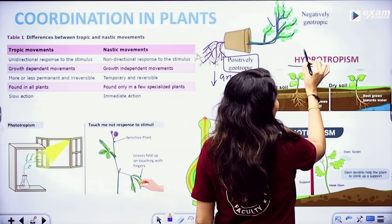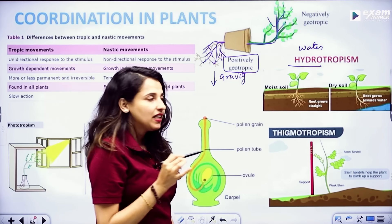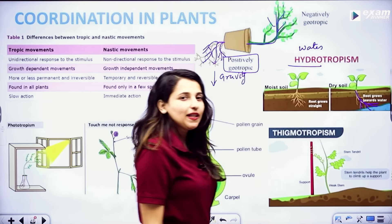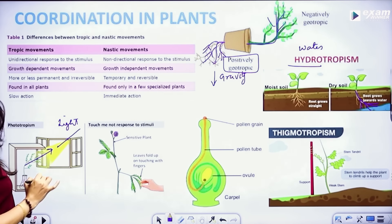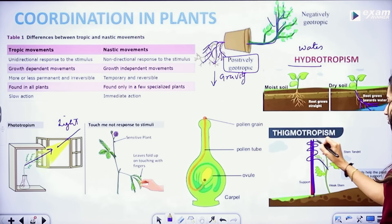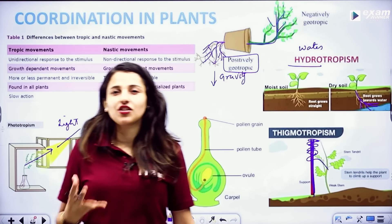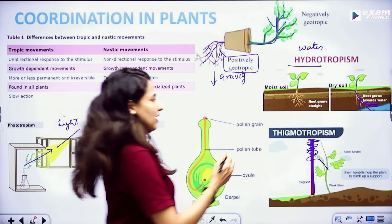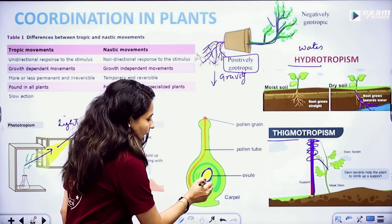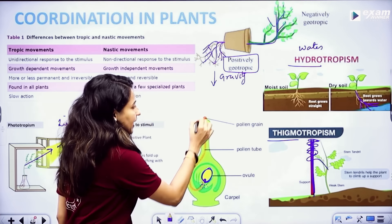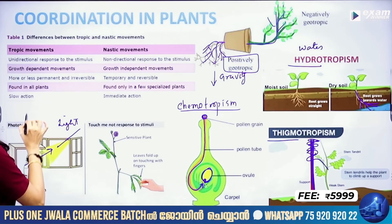Now we are talking about hydrotropism — the movement of roots toward water. Then we are talking about phototropism — the stem moves in the direction of light. Then we are talking about thigmotropism — movement in response to support or touch, as in climbing plants. And finally, chemotropism — for example, the pollen tube moves toward the egg in the ovary due to chemicals. This is because of chemical stimuli.